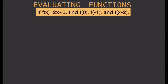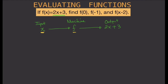A function takes an input, and that input is x. You feed x to the machine, which is the function f. The function f takes that value, makes some operations, and gives you an output. In this case our output is 2x plus 3. So the machine is f, the input is x, and f transforms x into 2x plus 3.